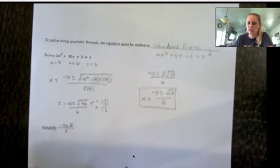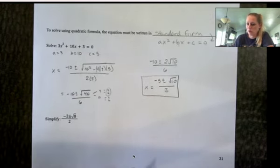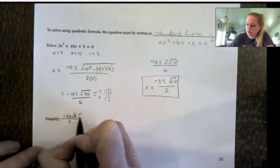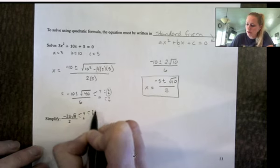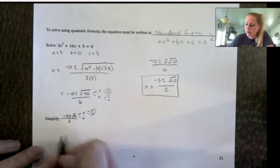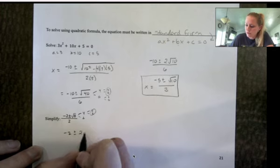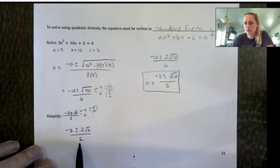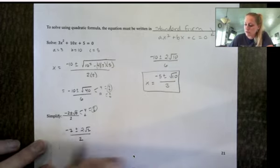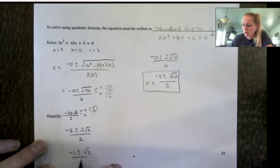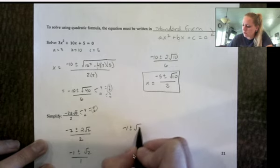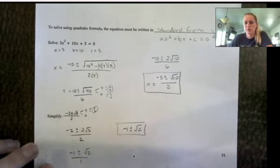Let's practice that reducing one more time. We have these two terms, so let's break down the square root of 8. Since 8 is 4 times 2, we can pull out a pair of 2s, giving us negative 2 plus or minus 2 root 2, all over 2. Again looking at those three values, 2 goes into all of them, so dividing by 2 gives negative 1 plus or minus root 2 — that's its most simplified form.